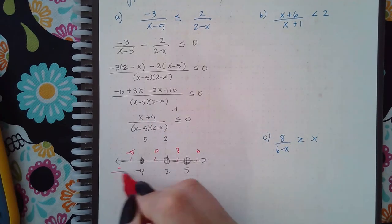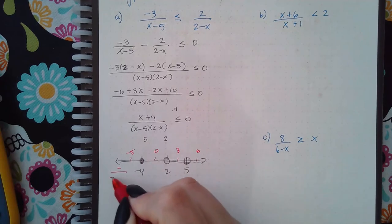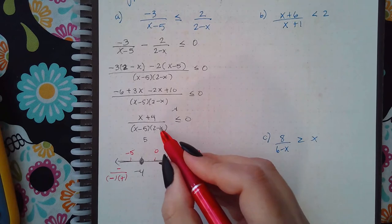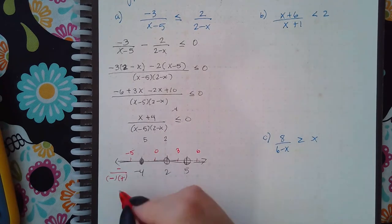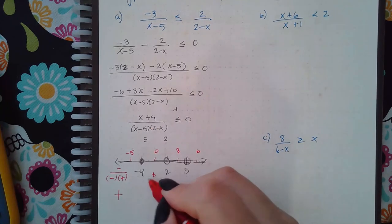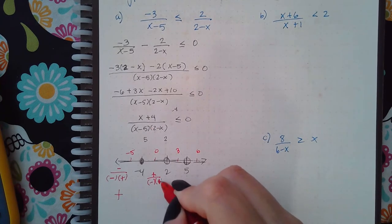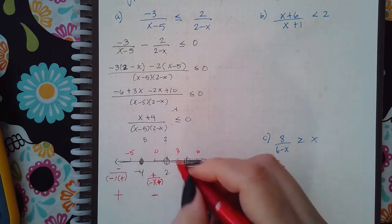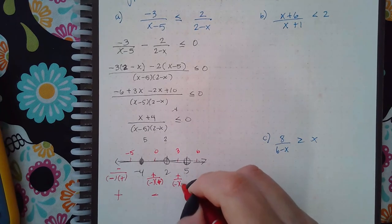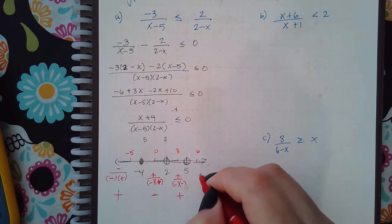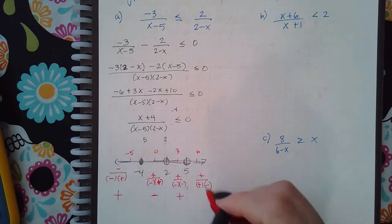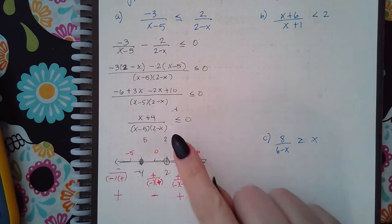For negative 5 I get a negative over a negative times a positive — that's 2 minus negative 2, plus 5 — giving positive in the end. For 0 I get a positive over a negative times a positive, so that's negative. For 3 I get a positive over a negative over a negative, which is positive. For 6 I get a positive over a positive over a negative, so that's negative in the end.